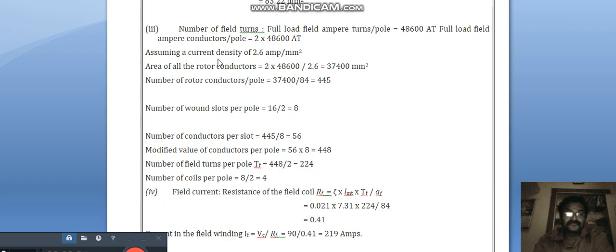Field current: number of field turns. Full load ampere turns per volt is equal to 48,600. Full load field ampere conductors per volt is equal to 2 into 48,680. Assuming the current density of 2.6 ampere per millimeter square.